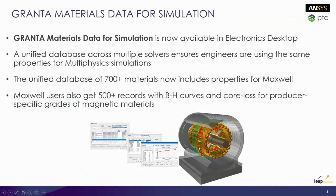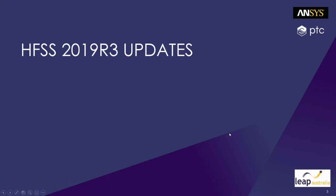Next is the Granta material data for simulation. The Granta material library is now included in ANSYS Electronic Desktop, which is a unified database across multiple solvers and ensures engineers are using the same material properties for multi-physics simulations. The unified database has about 700 plus materials, which includes properties for Maxwell as well. Maxwell users also get 500 plus records with BH curves and core loss for producer-specific grades of magnetic materials.